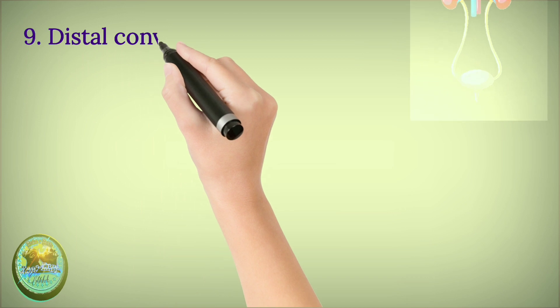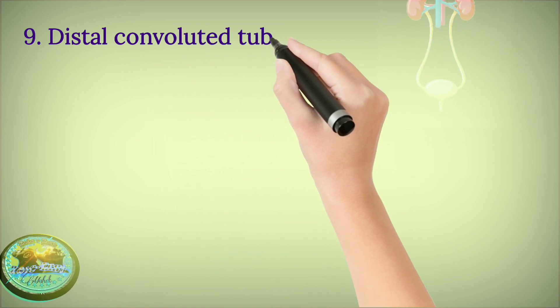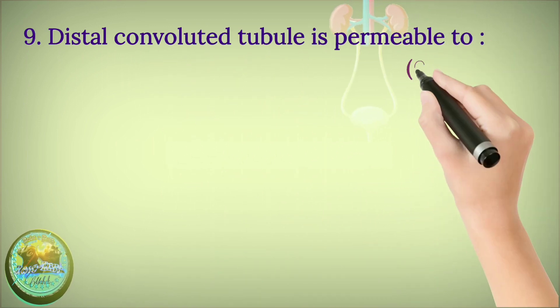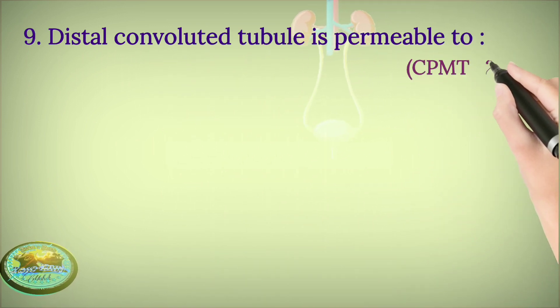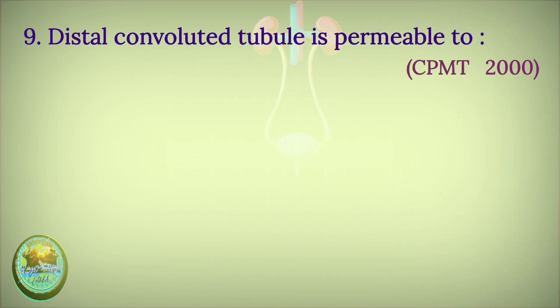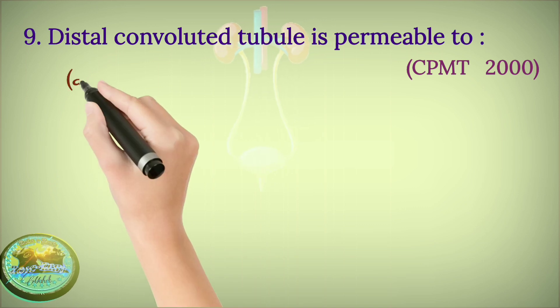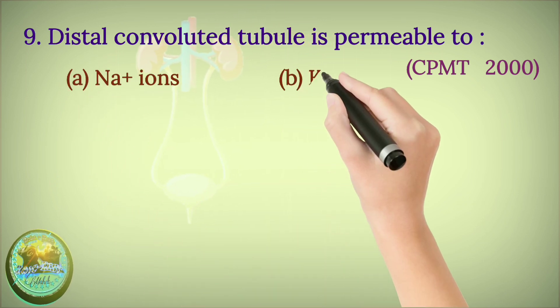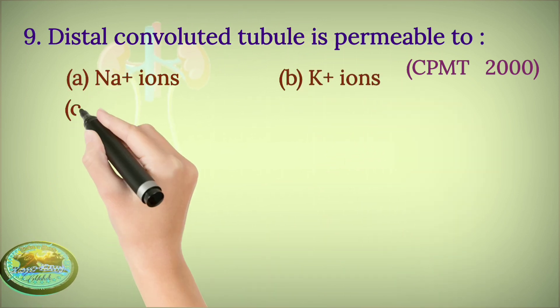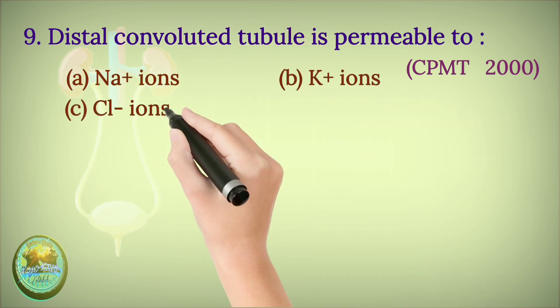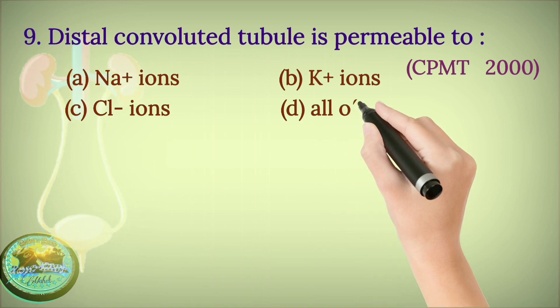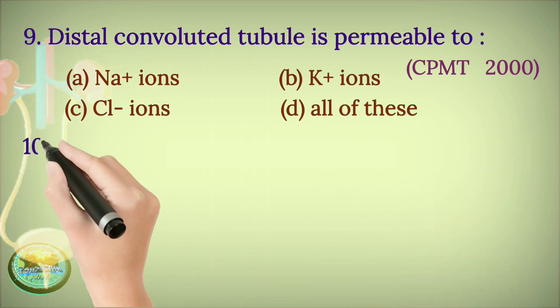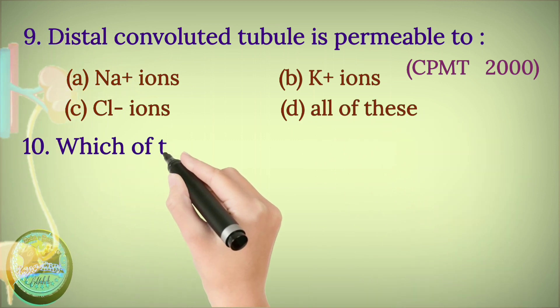Question 9: Distal convoluted tubule is permeable to — sodium ions, potassium ions, chloride ions, or all of these?